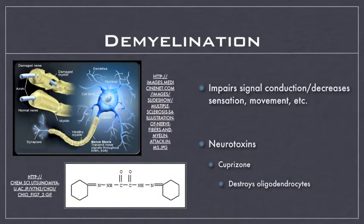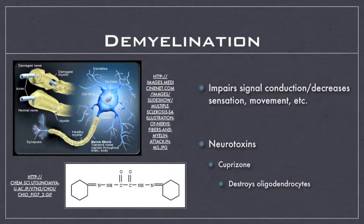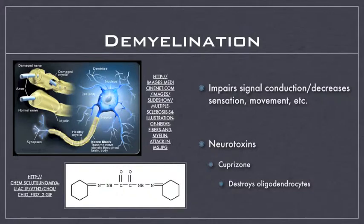With this information, we can look at what demyelination is. Simply, it is when these myelin sheets get damaged or even destroyed. This slows down electrical signals traveling down the axons of neurons, slowing down a variety of processes such as sensation, movement, etc. One particular cause of demyelination is a neurotoxin, specifically cuprazone. The exact mechanism by which cuprazone works here is relatively unknown, but cuprazone simply degrades oligodendrocytes and this, in turn, damages and in some cases destroys the myelin sheets.